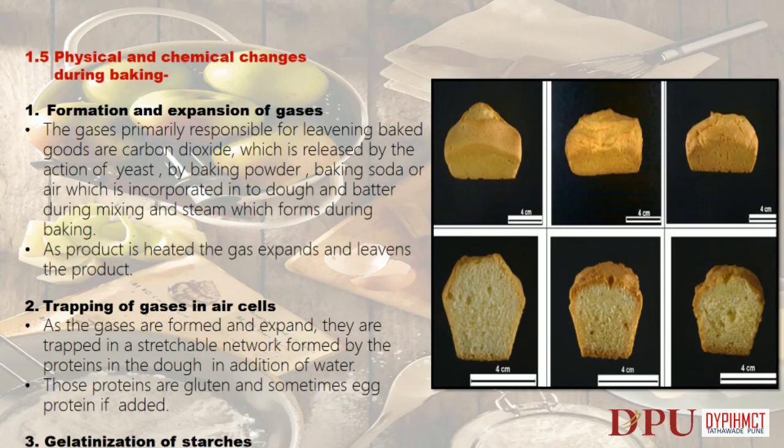1.5 Physical and Chemical Changes During Baking. Formation and expansion of gases: the gases primarily responsible for leavening baked goods are carbon dioxide, which is released by the action of yeast, baking powder, or baking soda; air which is incorporated into dough and batter during mixing; and steam which forms during baking. As the product is heated, the gas expands and leavens the product.